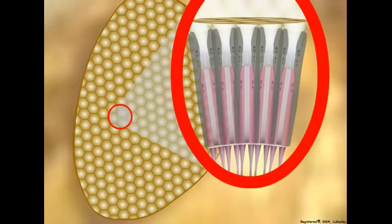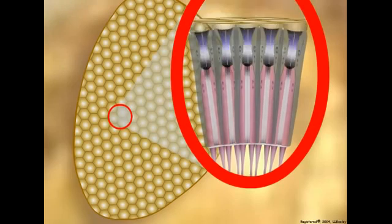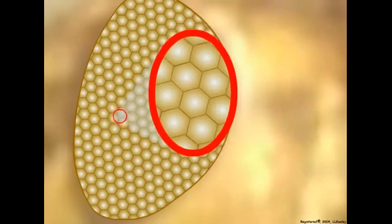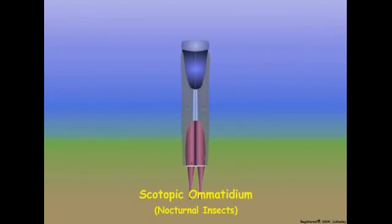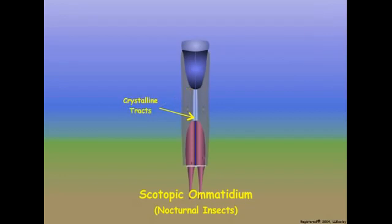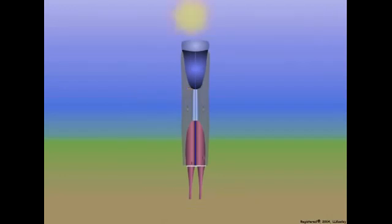Next, we will compare the structure and function of the photopic eye of day-active insect species to the eye of night-active insect species. Ommatidia in the compound eyes of nocturnal insects are referred to as scotopic ommatidia. The structure of scotopic ommatidia is similar to that of photopic ommatidia except that scotopic ommatidia appear to have an open space referred to as the clear zone between the crystalline cone and the retinula cells. The clear zone actually contains transparent crystalline tracts that arise from the retinula cells and extend to the crystalline cone. The crystalline tracts act as light guides. In scotopic ommatidia, incoming light is focused on the base of the crystalline cone and conducted to the rhabdom by the crystalline tracts.